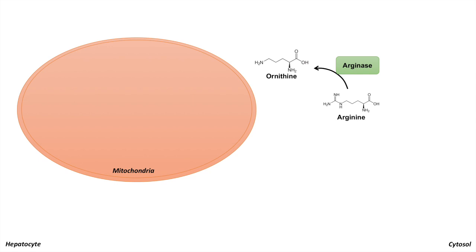Arginine gets acted on by arginase to form ornithine, another amino acid. In doing so, it removes part of the backbone of arginine that includes two amino groups — and that is what produces urea. Urea can easily be solubilized in the blood and excreted through the kidneys and out in the urine.